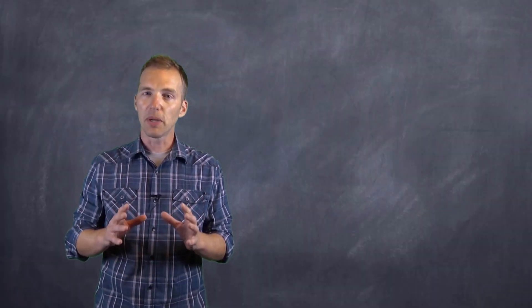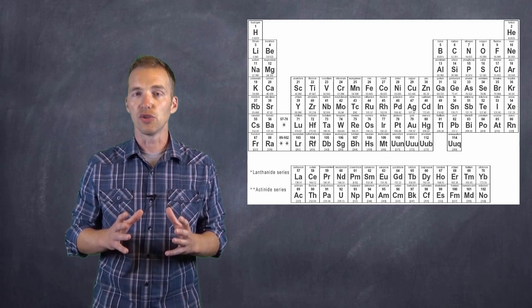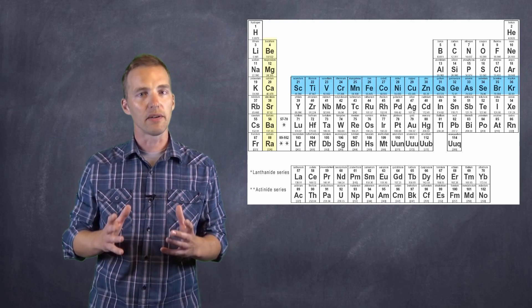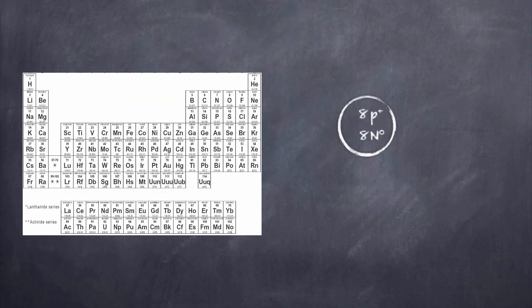So if we review the periodic table quickly, you'll remember that it's organized into vertical columns or groups and horizontal rows or periods. Now the number of periods is going to correspond to the number of circles that we're going to draw around the nucleus.